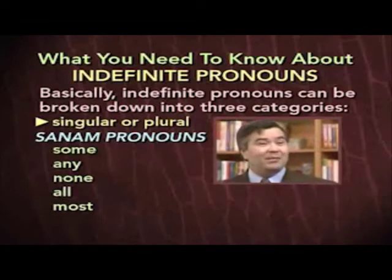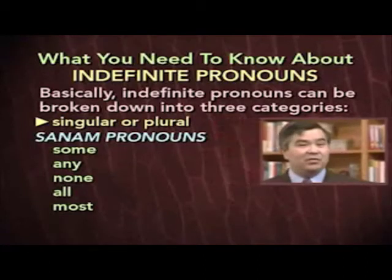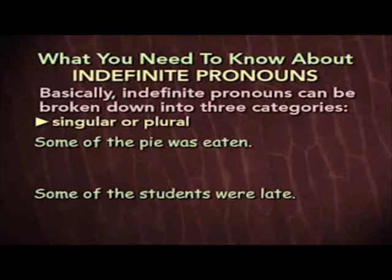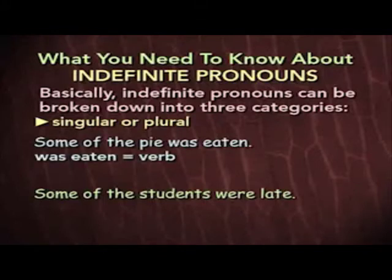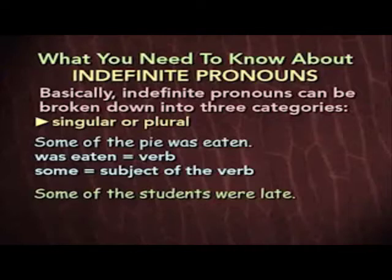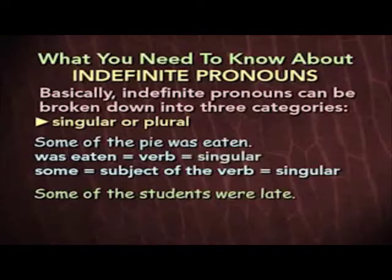These five pronouns — the SANAM pronouns — may be either singular or plural, depending on how they're used. Take a look at these two sentences: 'Some of the pie was eaten.' 'Some of the students were late.' In both sentences, an indefinite pronoun is the subject of the verb. In the first sentence, the verb is 'was eaten.' The subject is 'some' — some of the pie, which is a single thing. Therefore, we consider the pronoun singular, and that's why the singular verb 'was eaten' is correct.